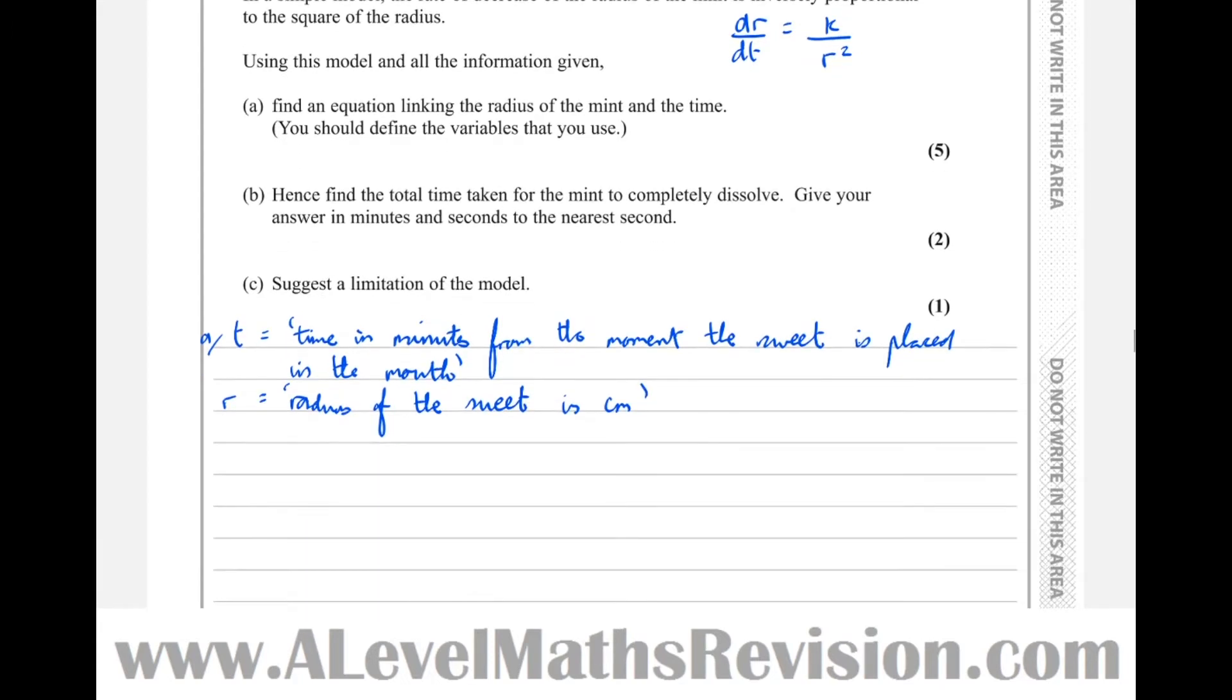So now, looking at this differential equation here, we've got dr by dt equals k over r squared. So the first thing that we should do when solving a differential equation is separate out the two elements of this differential, the dr and the dt. So let's times by dt.